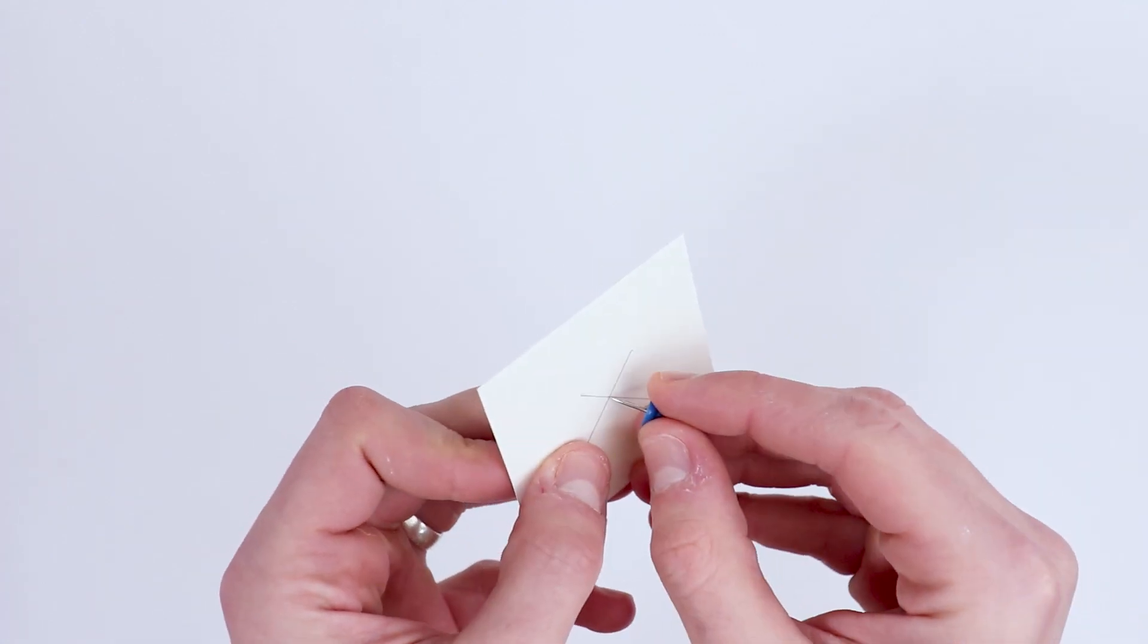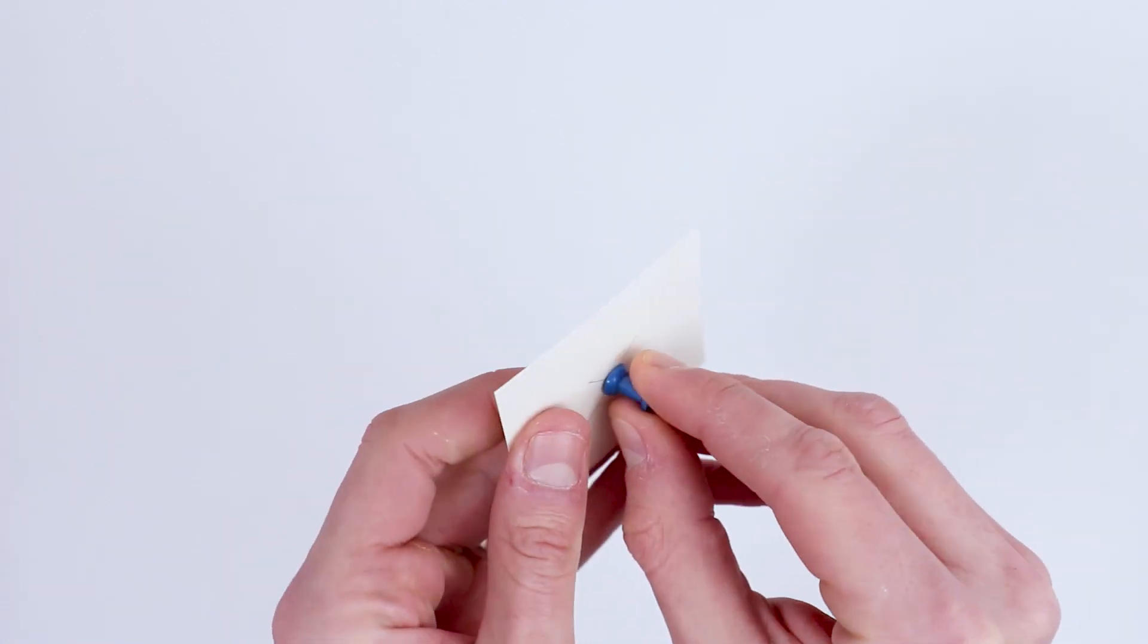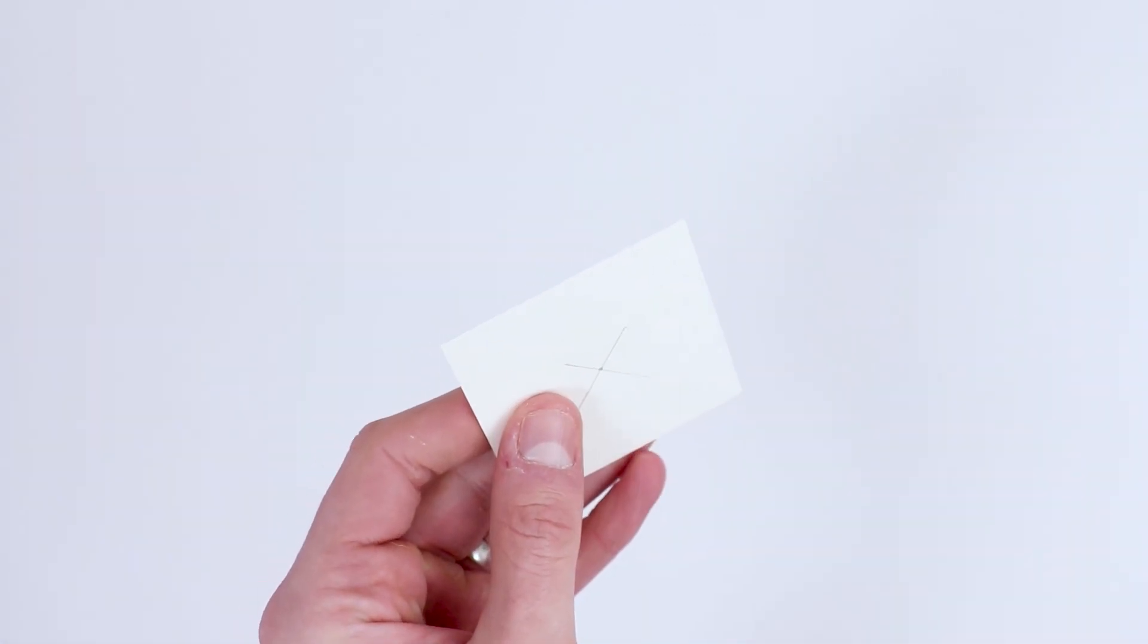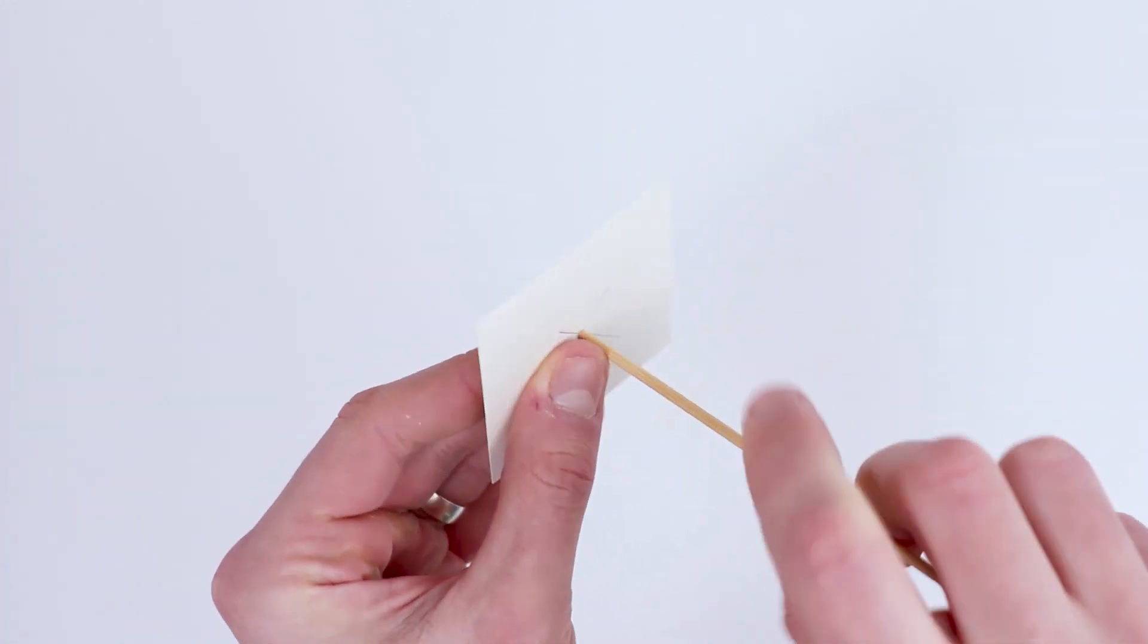And again, using a drawing pin, carefully poke a hole through this center point, then use the pointy end of your kebab stick to make the hole bigger.